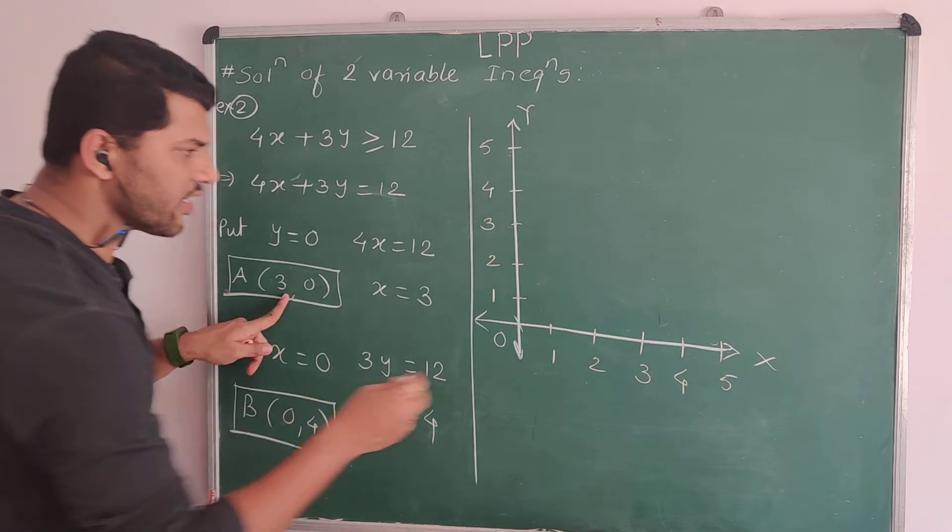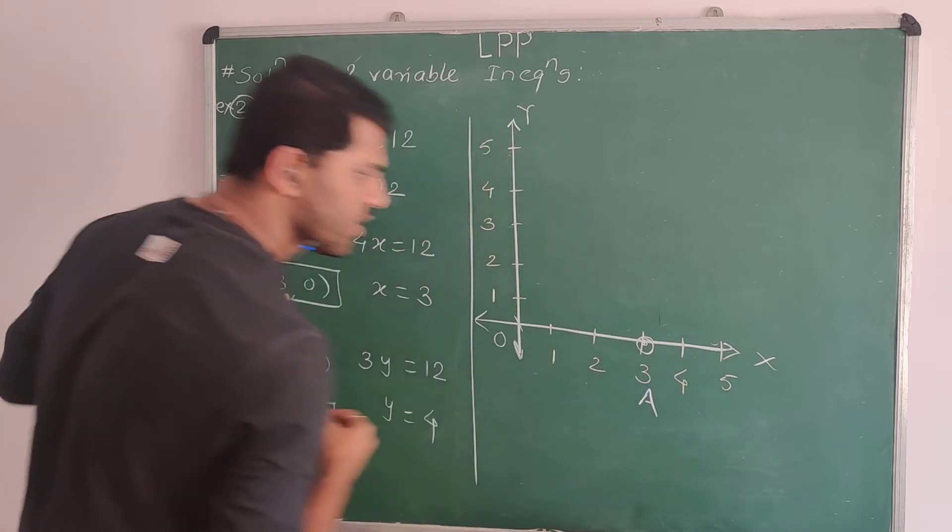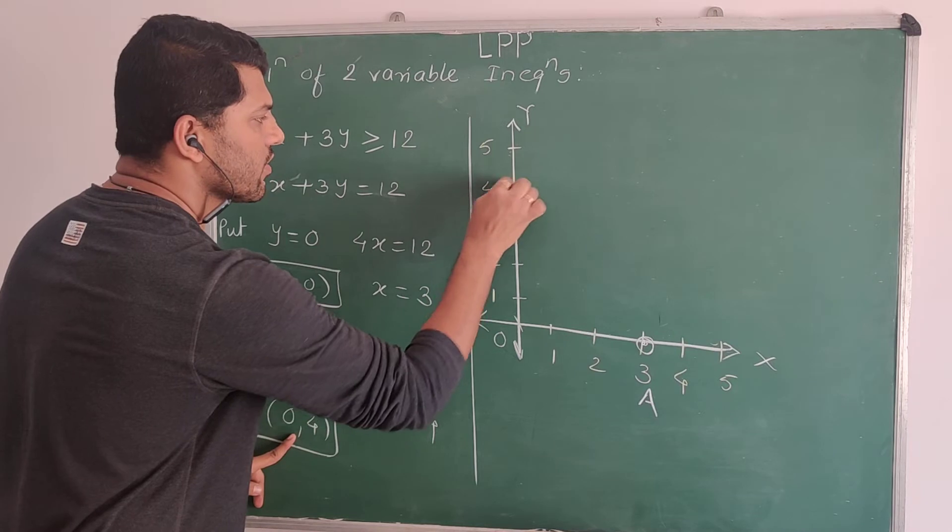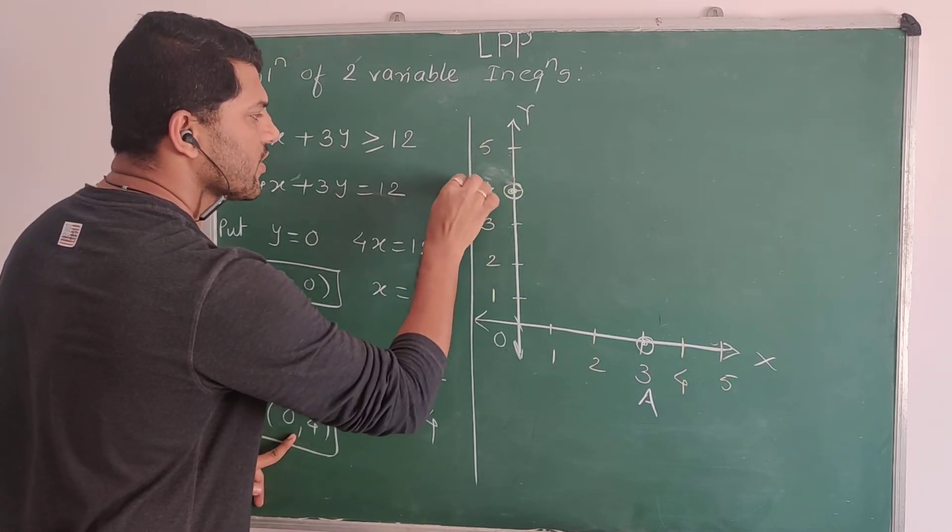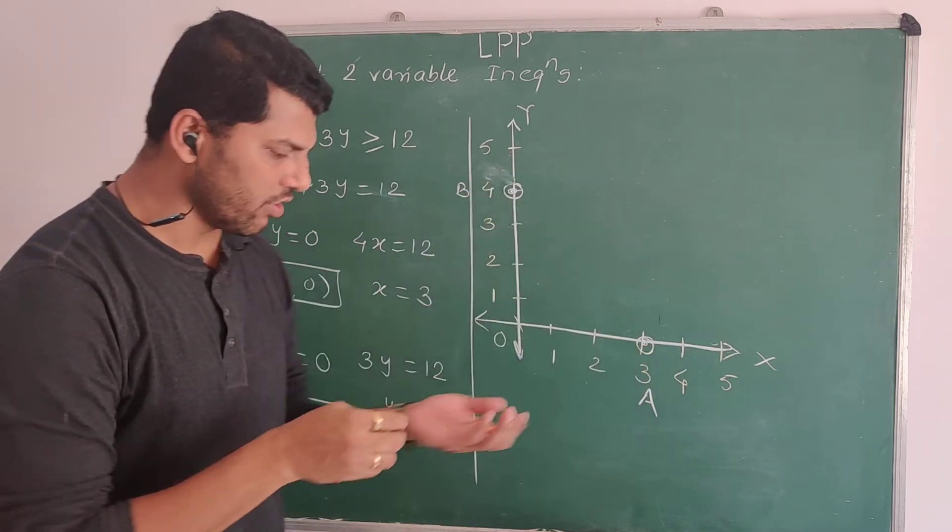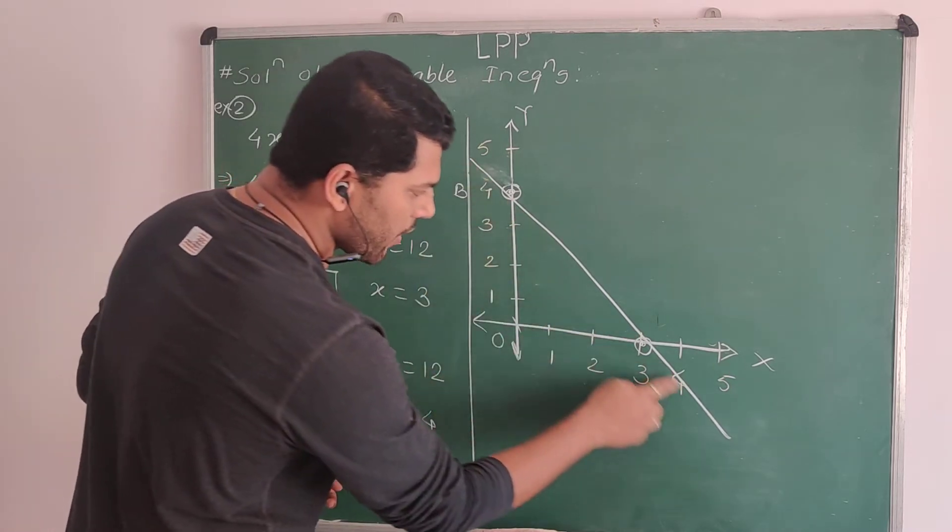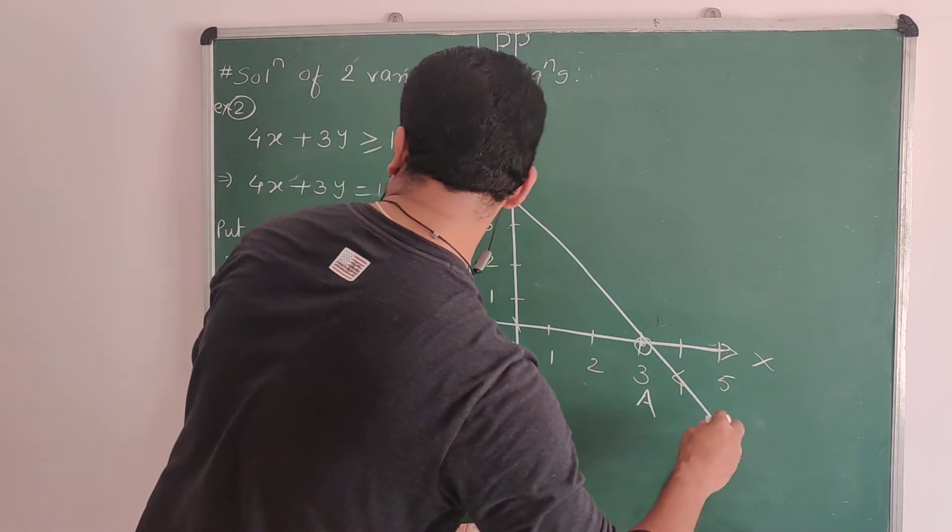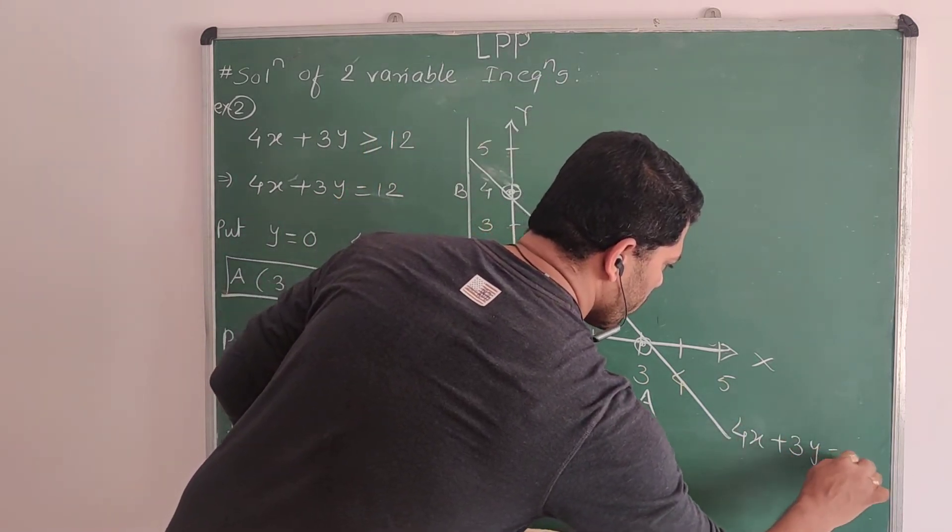This is a point on the x-axis, (3, 0) somewhere here. It's point A. This is a point (0, 4) on the y-axis. Mark it as point B somewhere on the y-axis. Now, let's draw a line passing through these two points. This is the line which passes through these two points. Let's write this equation: 4x plus 3y equal to 12.